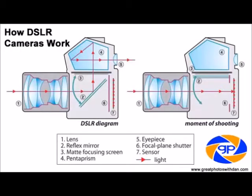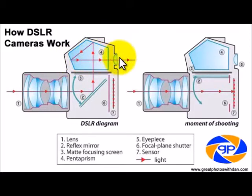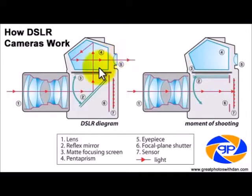This is where the light comes in through along this red line number one — light coming through the lens, hitting off this reflex mirror, bouncing up into the pentaprism, and then it bounces a few more times and through the viewfinder. This allows us to see the image normally as we would look through a standard lens.